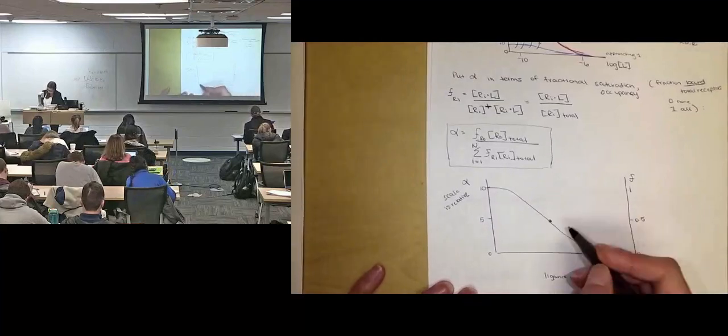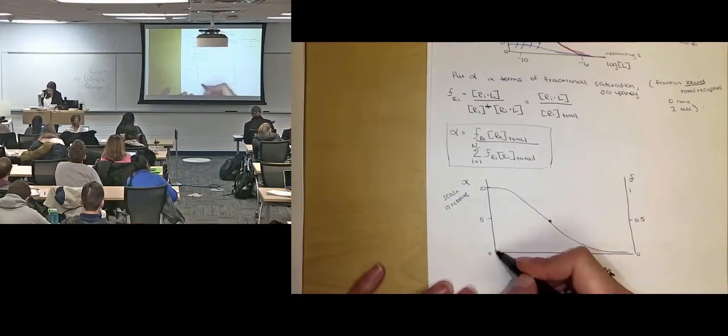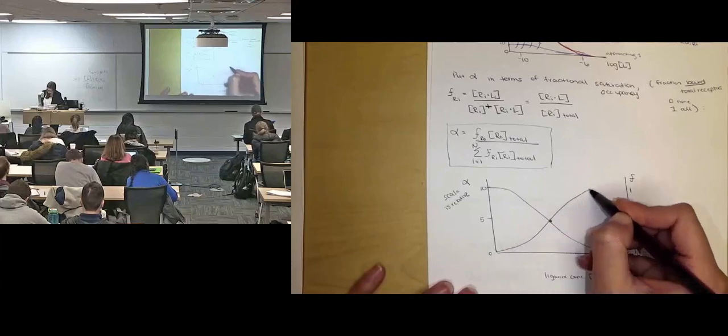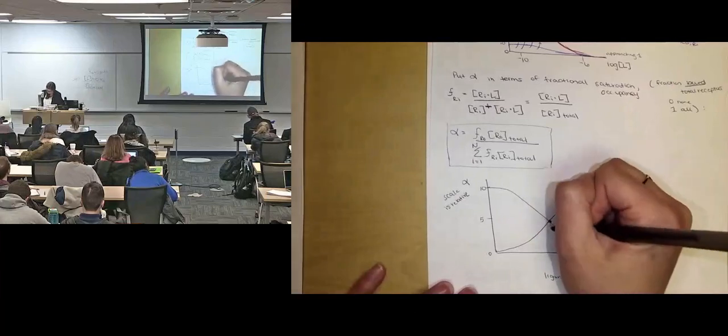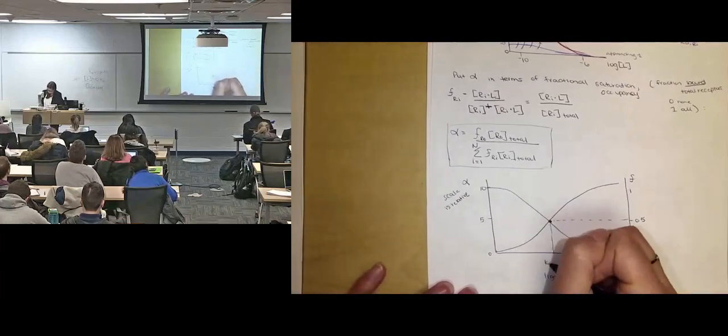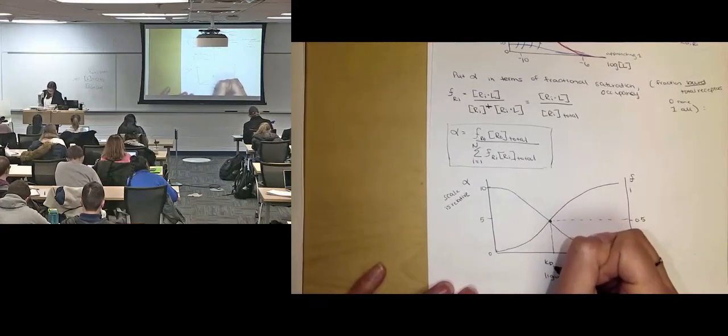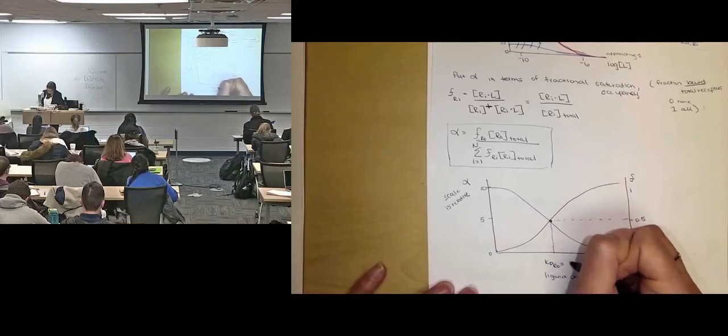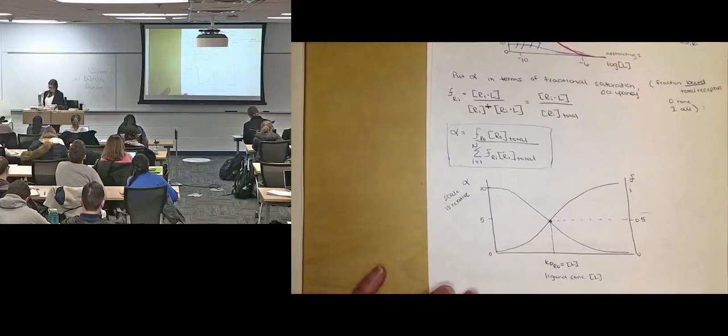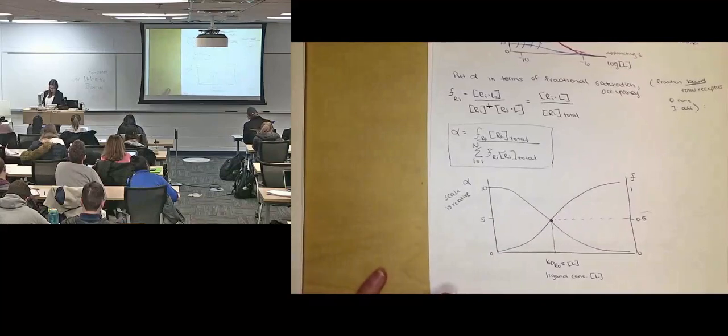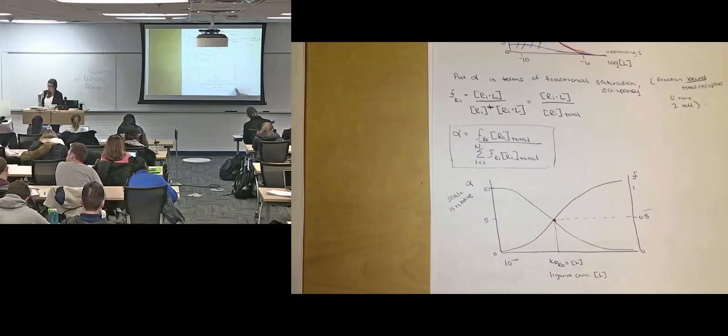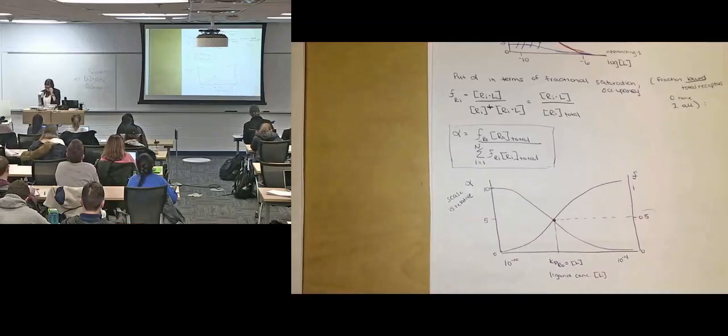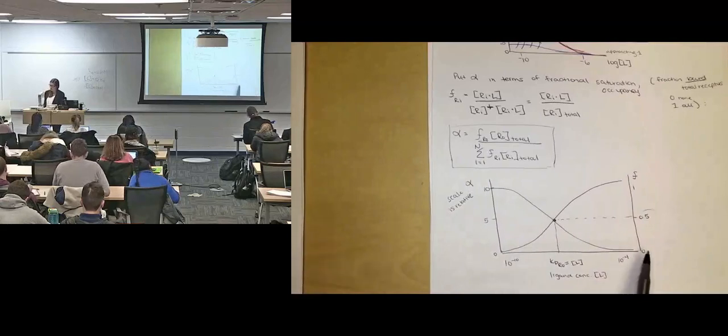And then fractional saturation, on the other hand, our universal binding curve as ligand concentration goes up, looks something like this. This is our KD. R naught is equal to L when fractional saturation is at half. This is in the 10 to the negative 10th range. This is in the 10 to the negative 4th range. So ligand concentration is going up.